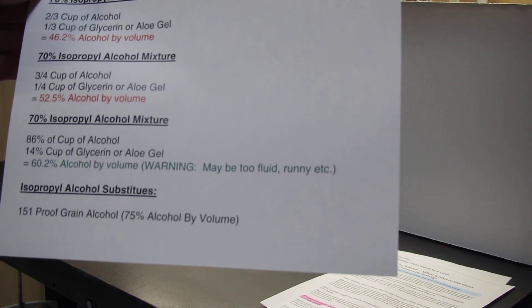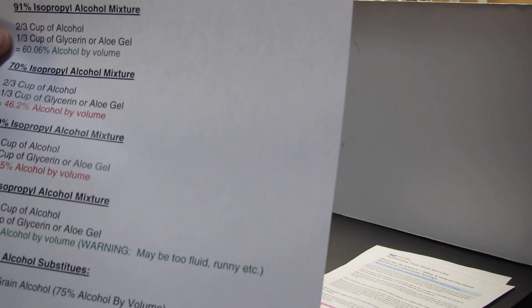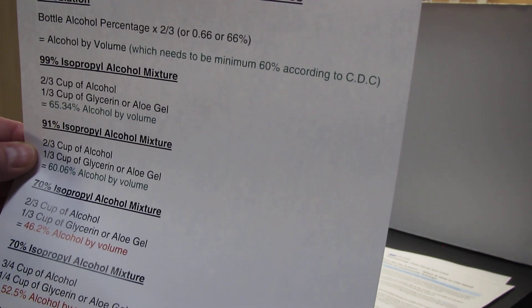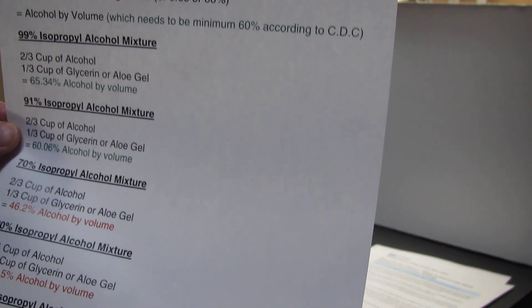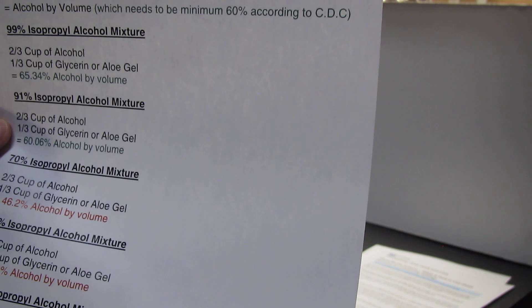So anyways, without further ado, we're going to show you how to mix this and mix it properly so that you can get to that 60% alcohol by volume rating that the CDC and actually the World Health Organization says is the key number for killing bacteria, germs, viruses.